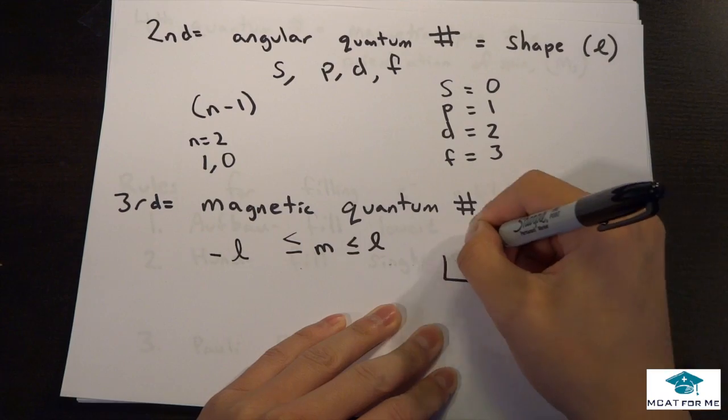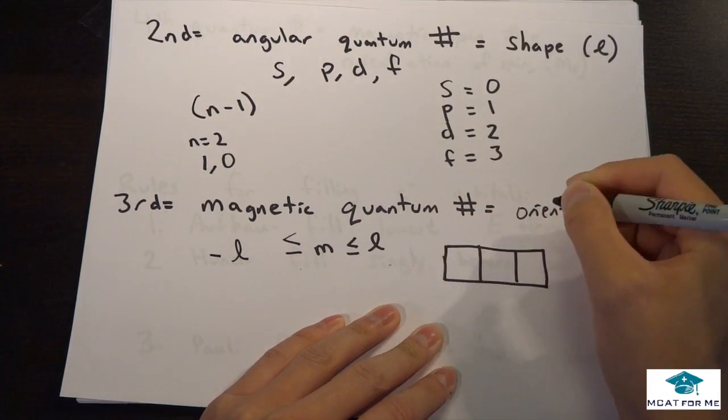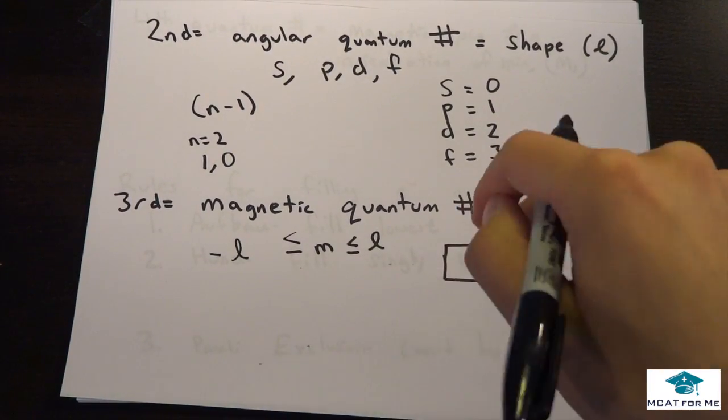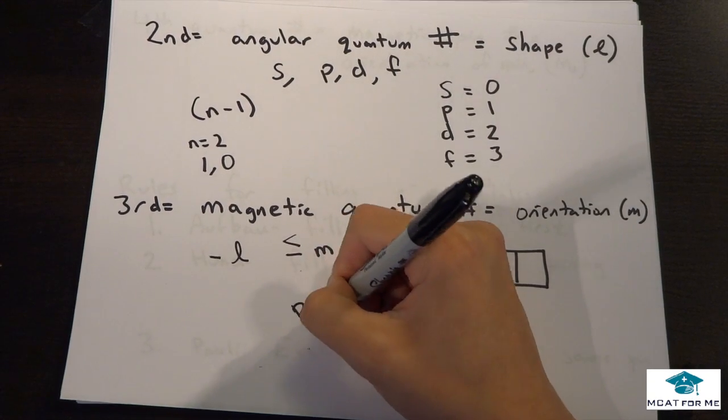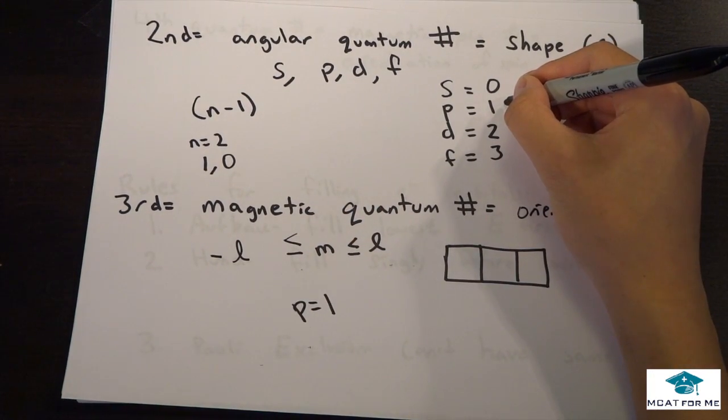So for example, if we had a P orbital like this, we have three orbitals within the P orbital. We have three actual groupings or boxes that we can put our electrons in. And so remember from before, if this is a P orbital, what would our angular quantum number be? Well, it would be 1, right? Because remember from before right here.